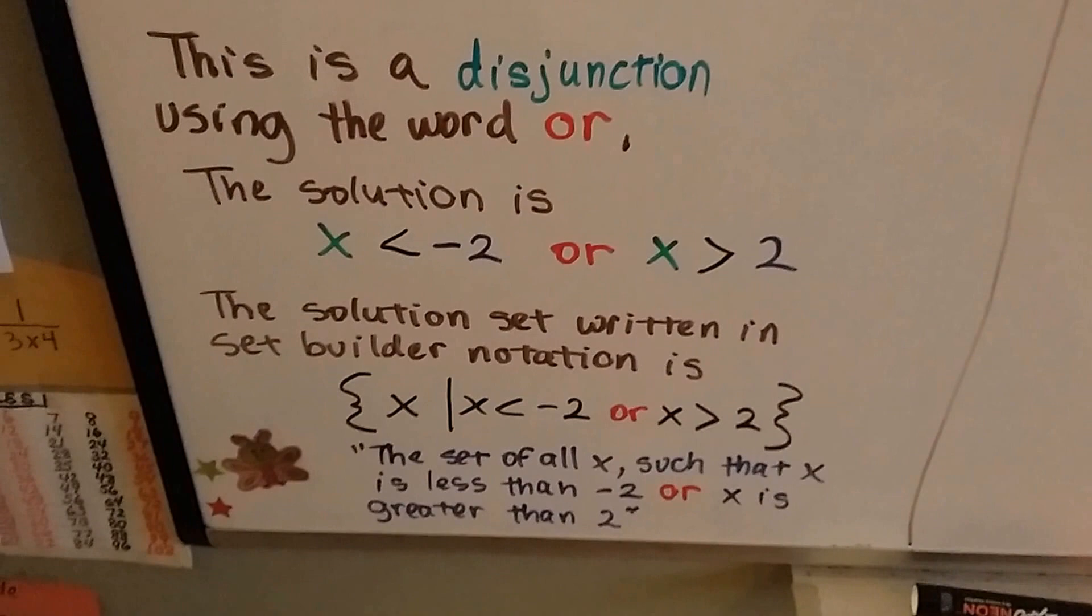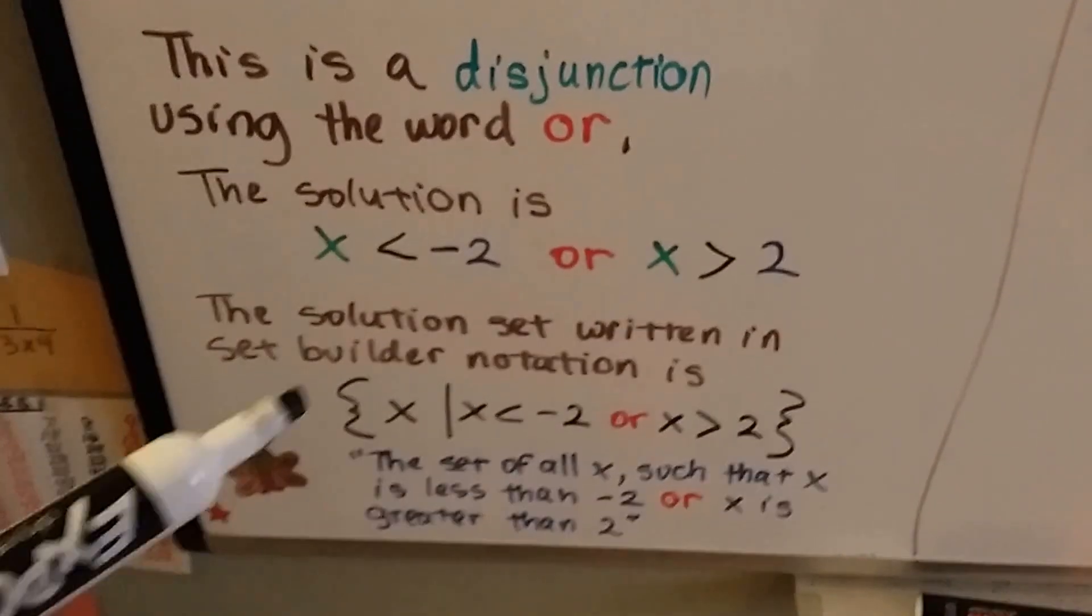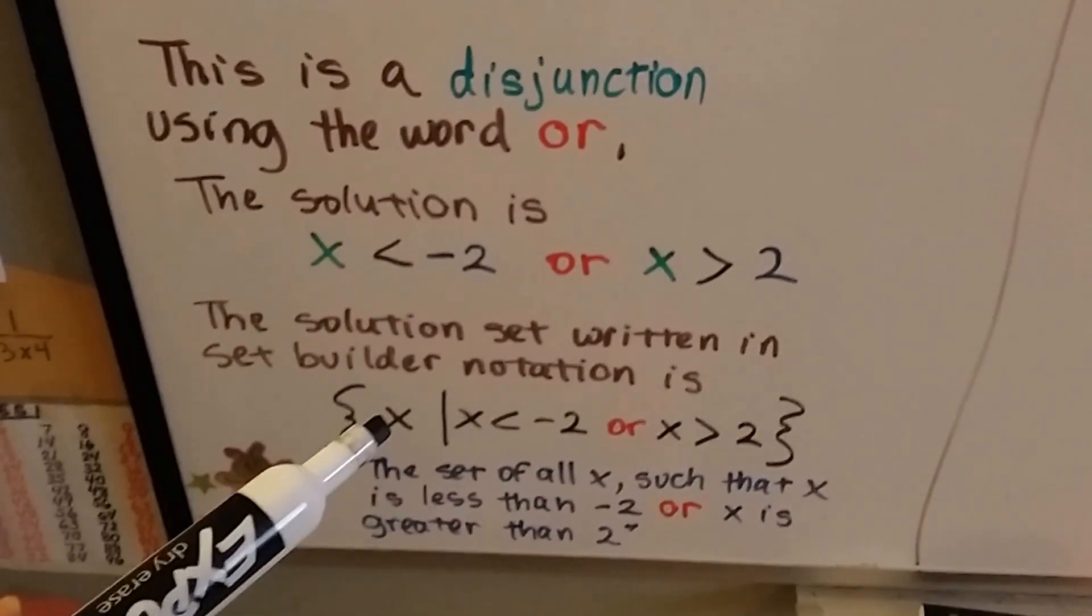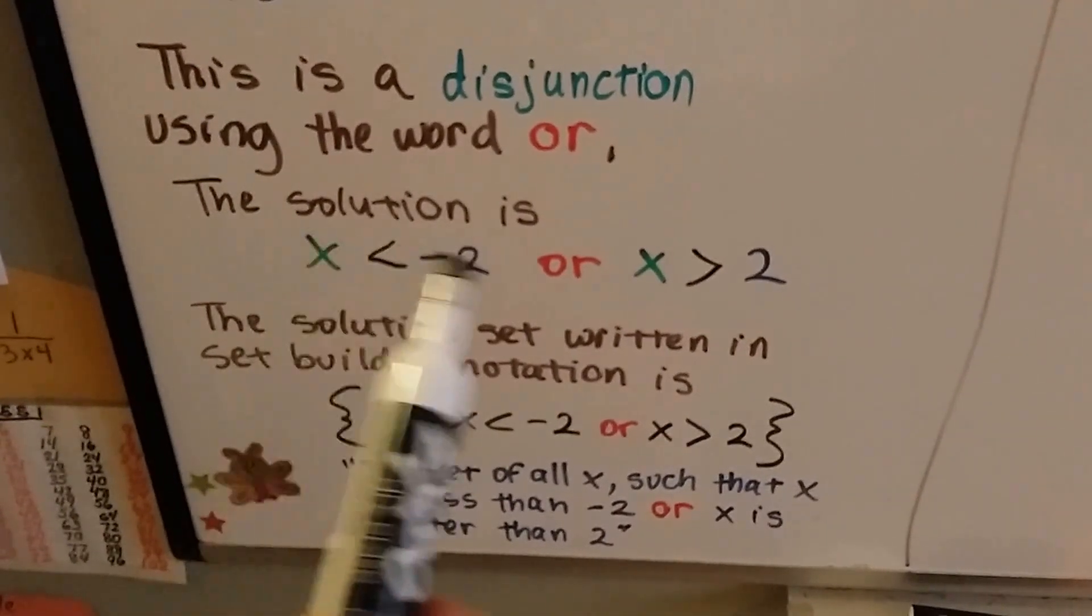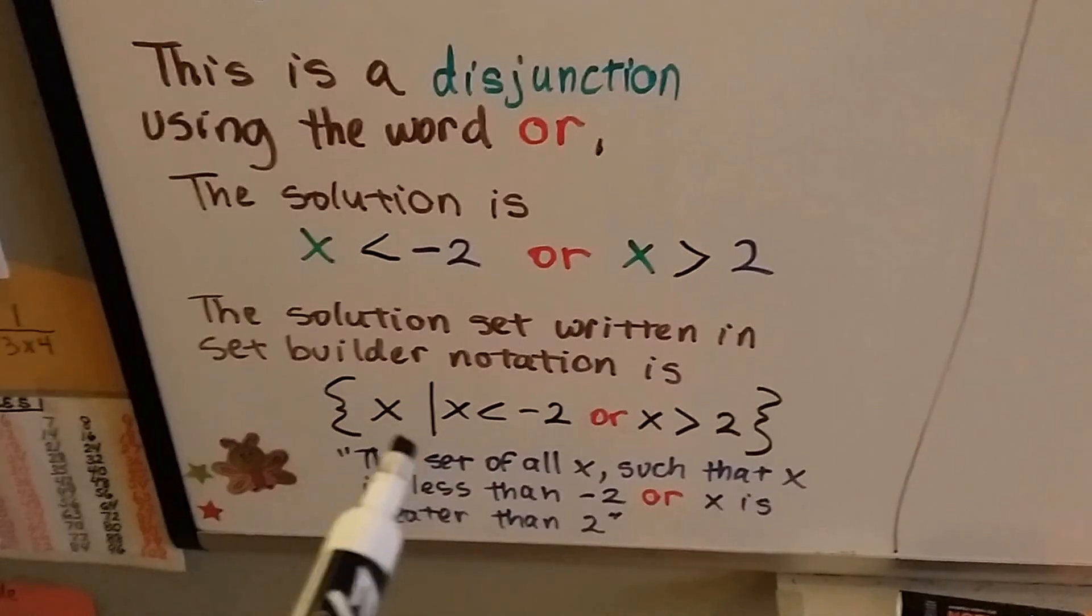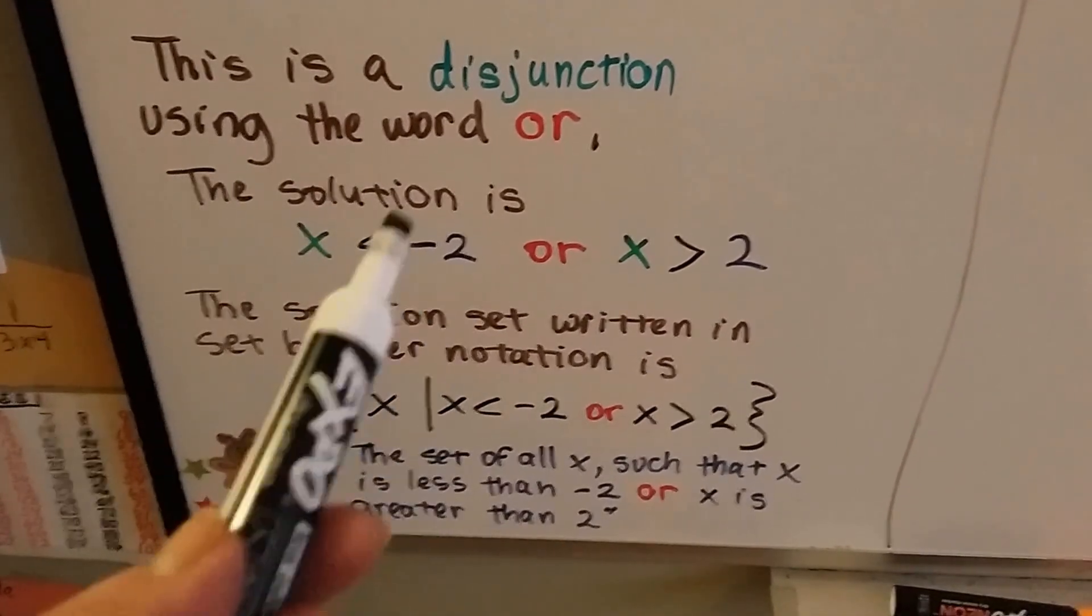The solution set is written in set builder notation. We use our set braces, and we put x with the such that bar, and we get this just placed inside of the set braces with the x and the such that bar.